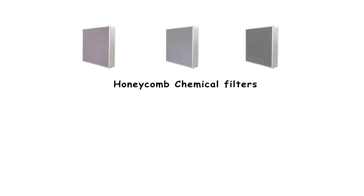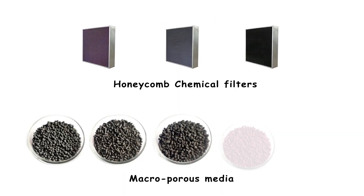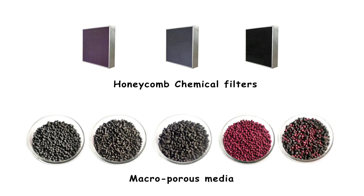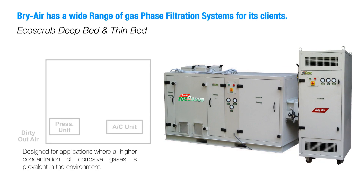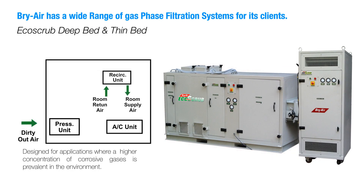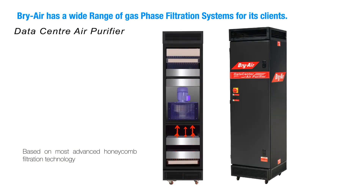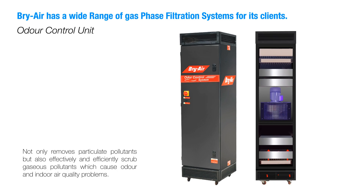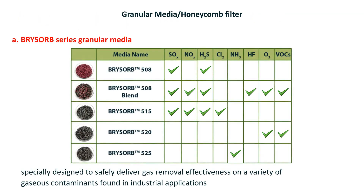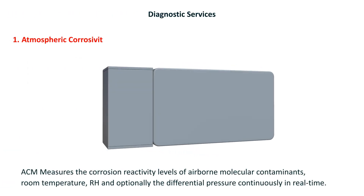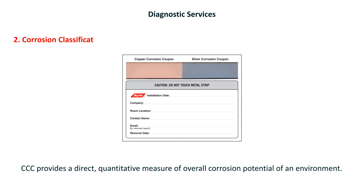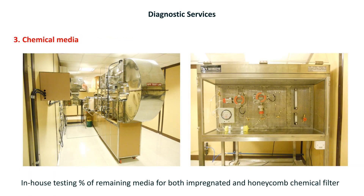A wide range of fluted chemical filters and macroporous granular media are the most suited for efficient removal of almost all types of harmful contaminants. Briar Air has a wide range of gas phase filtration systems for its clients: Eco Scrub deep bed and thin bed, both pressurization and recirculation type; Data Center Air Purifier; Odor Control Unit; Dry Swab series granular media; Dry Swab series chemical filters; Atmospheric Corrosivity Monitor, ACM; Corrosion Classification Coupon; and Chemical Media Residual Life Testing.